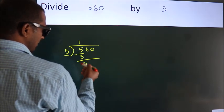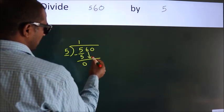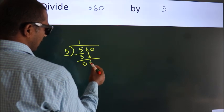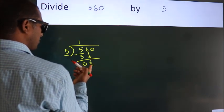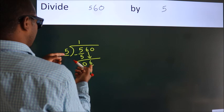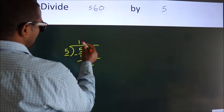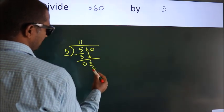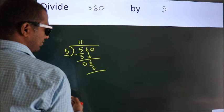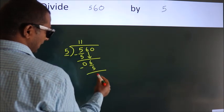After this, bring down the beside number. So 6 down. So 6. A number close to 6 in 5 table is 5 once, 5. Now we subtract. We get 1.